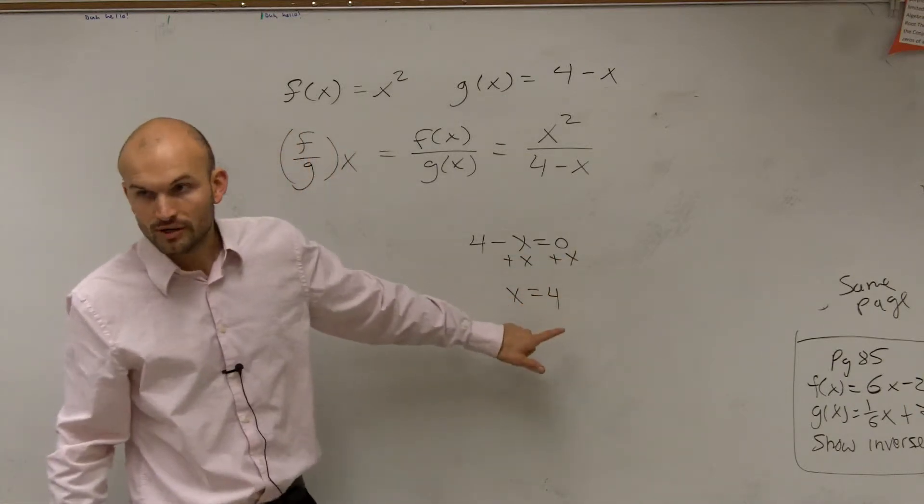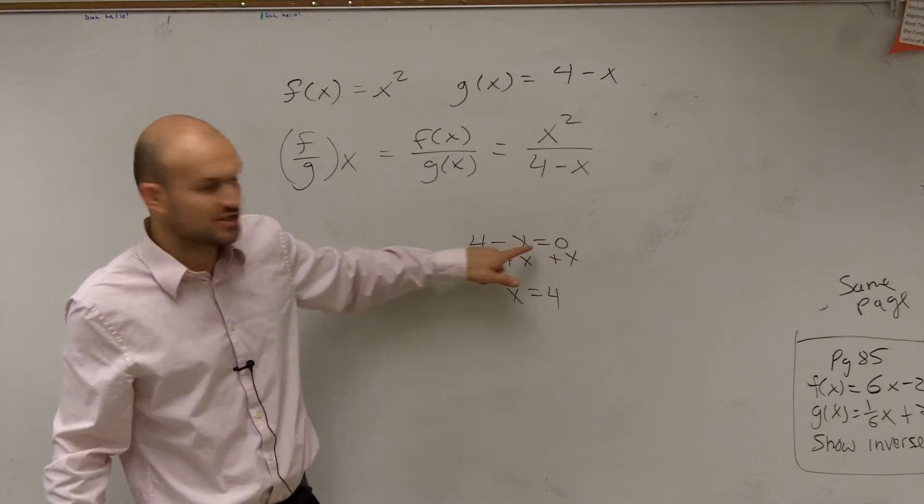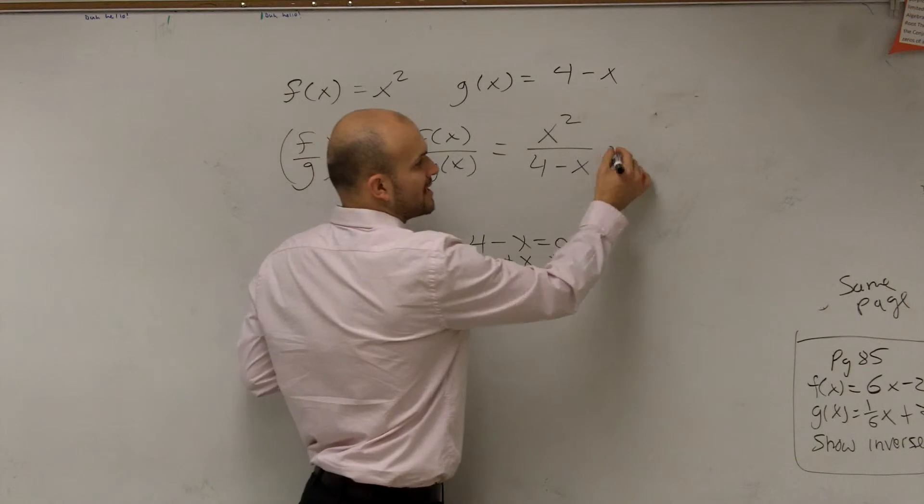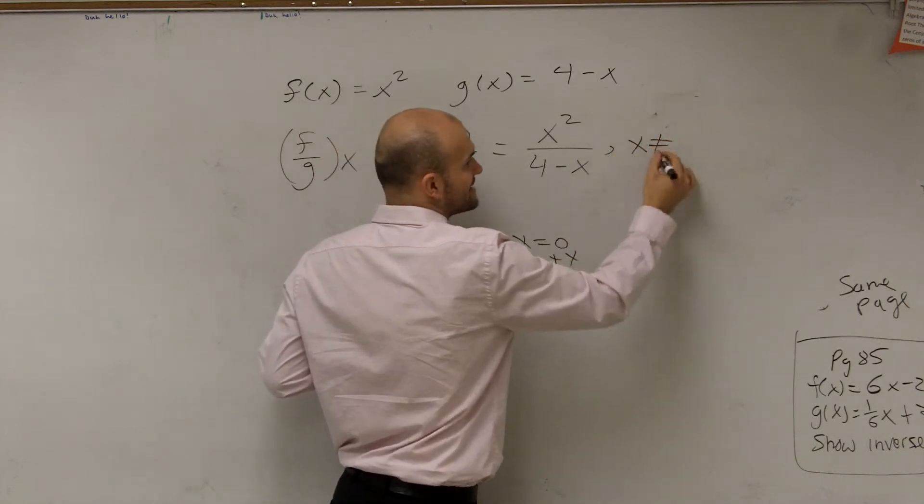When x equals 4, this expression equals zero, right? You don't want that to equal zero in the denominator. So you say, x cannot equal 4.